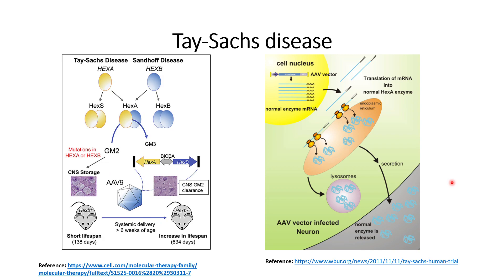Let us now understand one approach that can be used to treat Tay-Sachs disease, known as enzyme replacement therapy. In Tay-Sachs disease the HEXA gene is not performing its function normally, and in the case of Sandhoff disease the HEXB gene is not performing its function normally. In both cases, a plasmid can be inserted with the help of a viral vector such as adeno-associated virus.